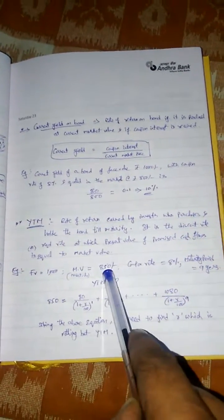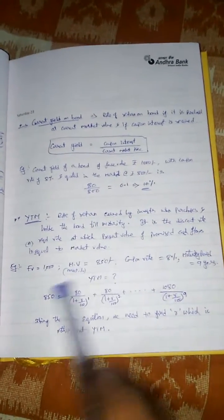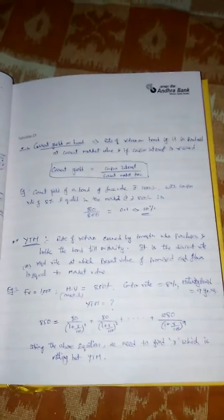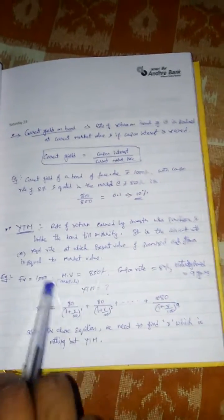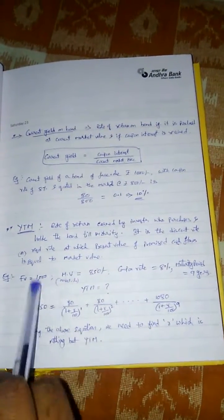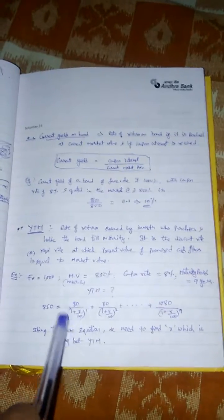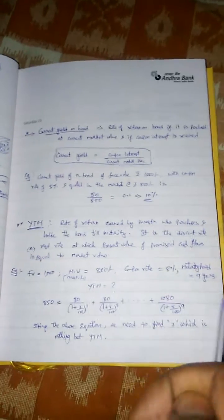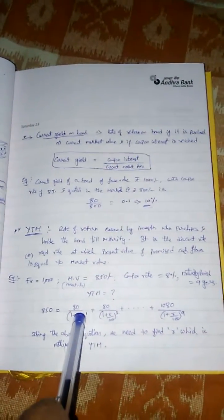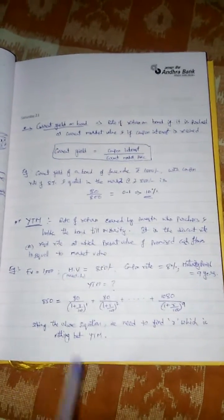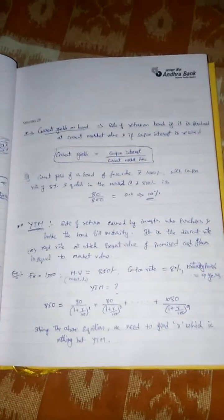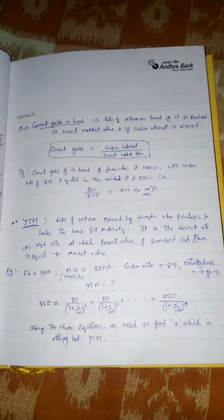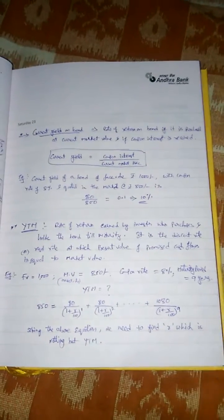To calculate YTM: face value is 1000, market value is 850, coupon rate is 8%, and maturity period is 9 years. What is missing is the market rate or rate of return — that is the YTM. The market value of 850 is the present value of all future inflows. With an 8% coupon, each year gives 80, and at year 9 we get 1080. So: 80/(1+r/100)^1 + ... + 1080/(1+r/100)^9 = 850. Solving for r gives the YTM. In the exam, use the substitution method with the four given options, as the maturity period is usually 3 or 4 years.